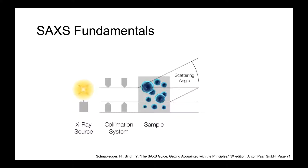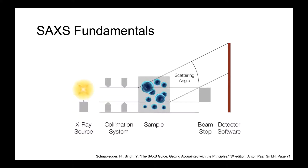As those x-rays make their way to the detector, they pass by a beam stop, which serves two major functions. First, it blocks out the direct beam, making it much easier to detect the scattered x-rays you want to look for. Second, it protects your detector from the direct beam so it doesn't get oversaturated, helping with both getting the measurement and prolonging the life of the instrument. Finally, those scattered x-rays make their way to the detector.